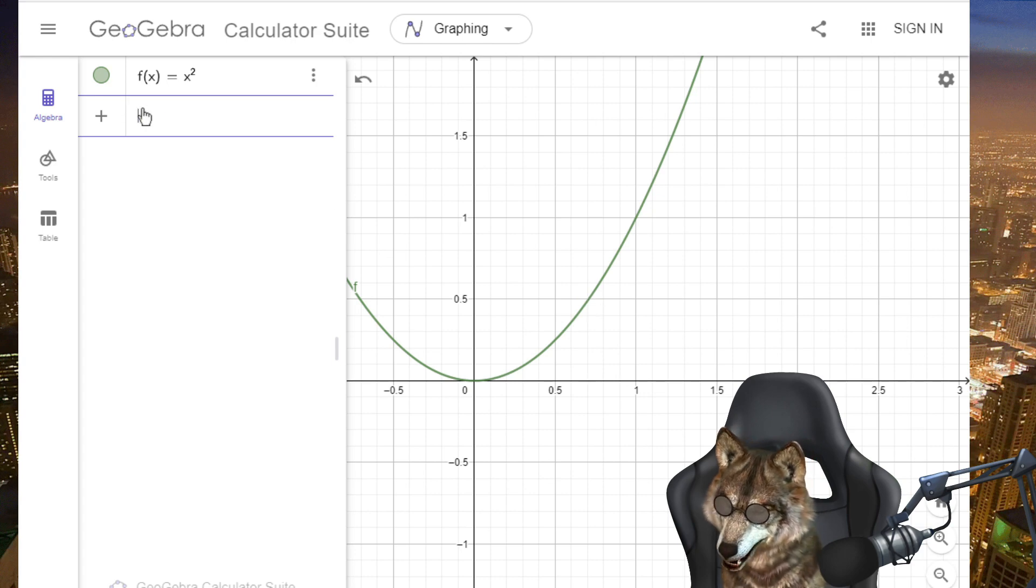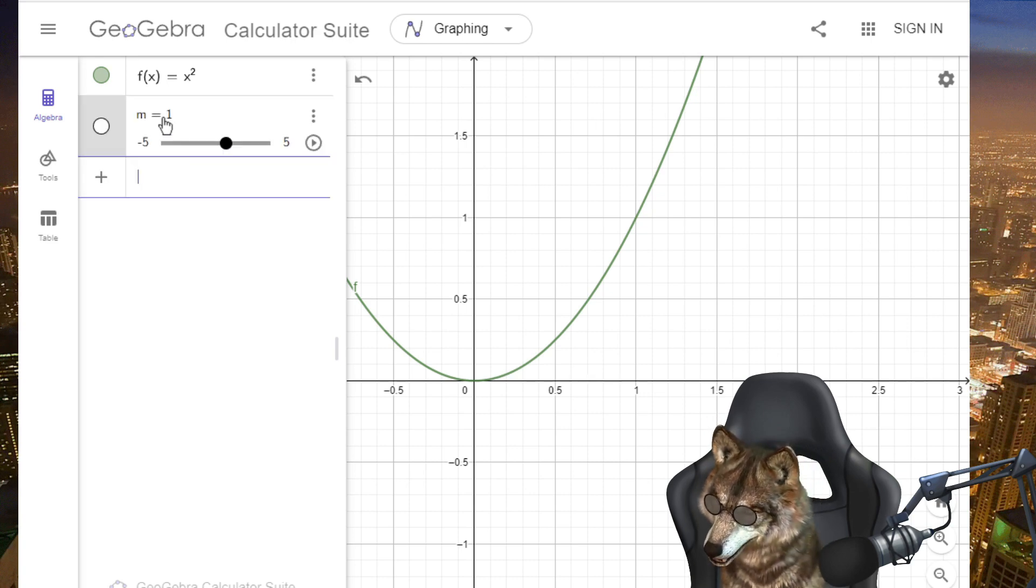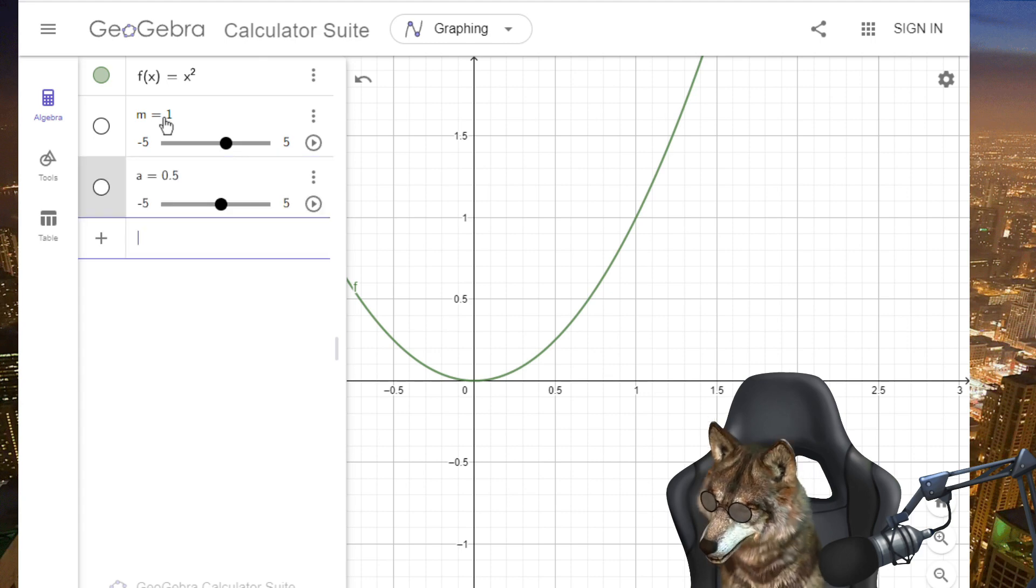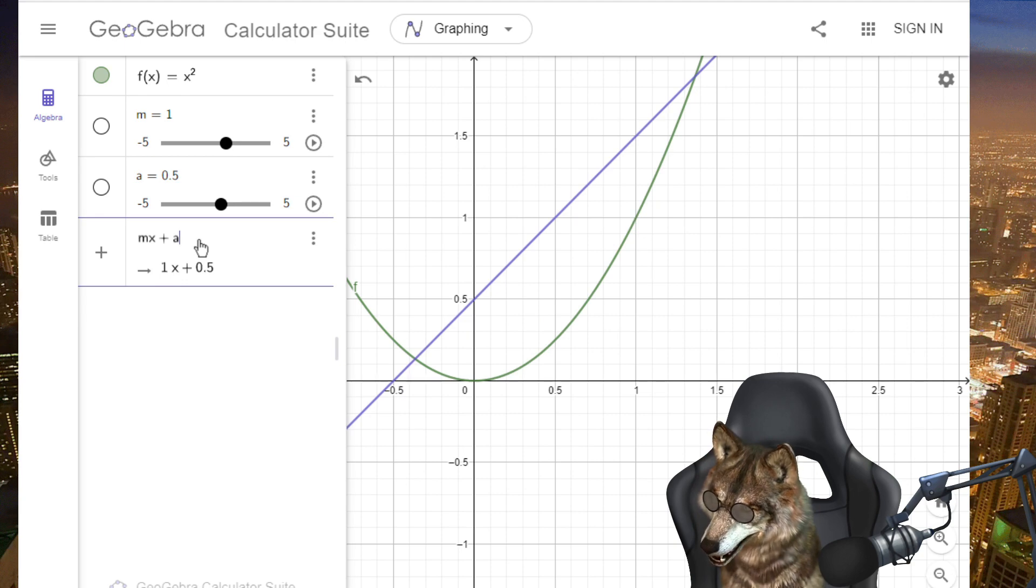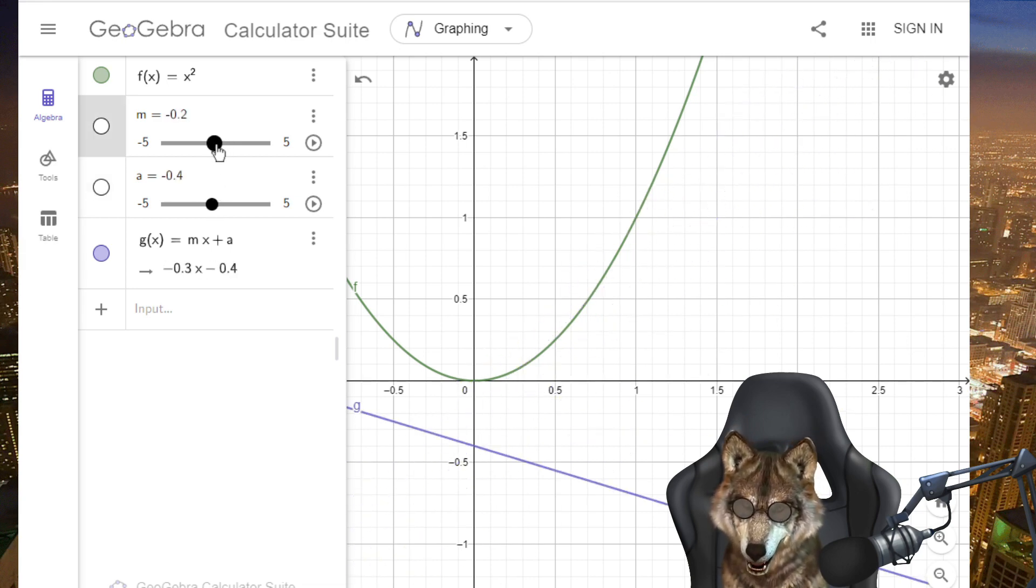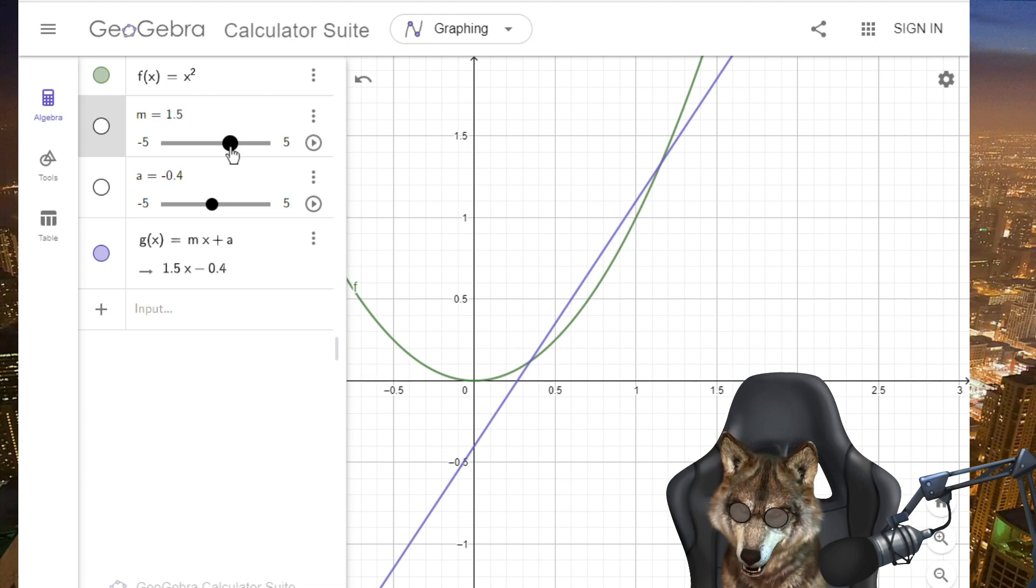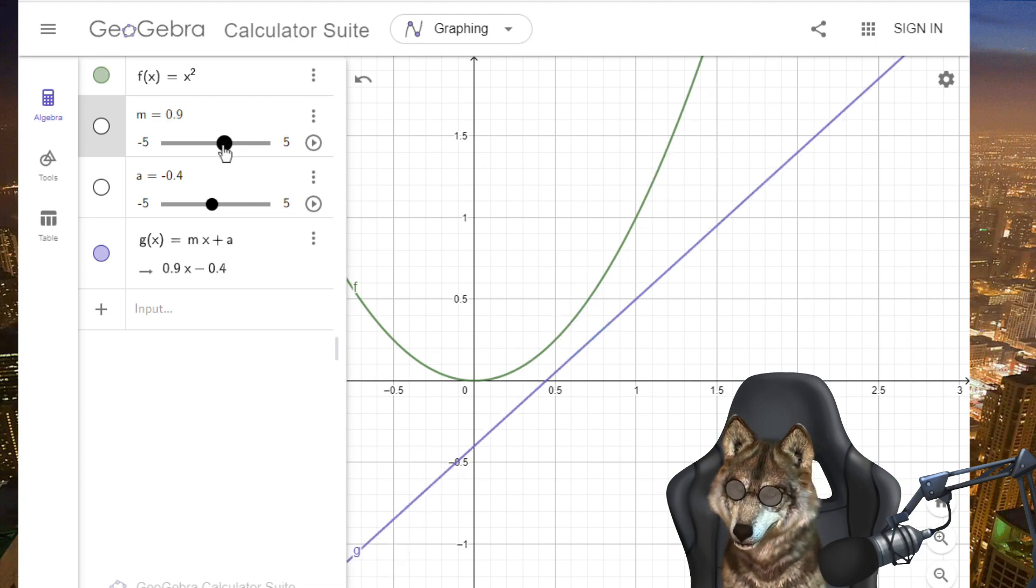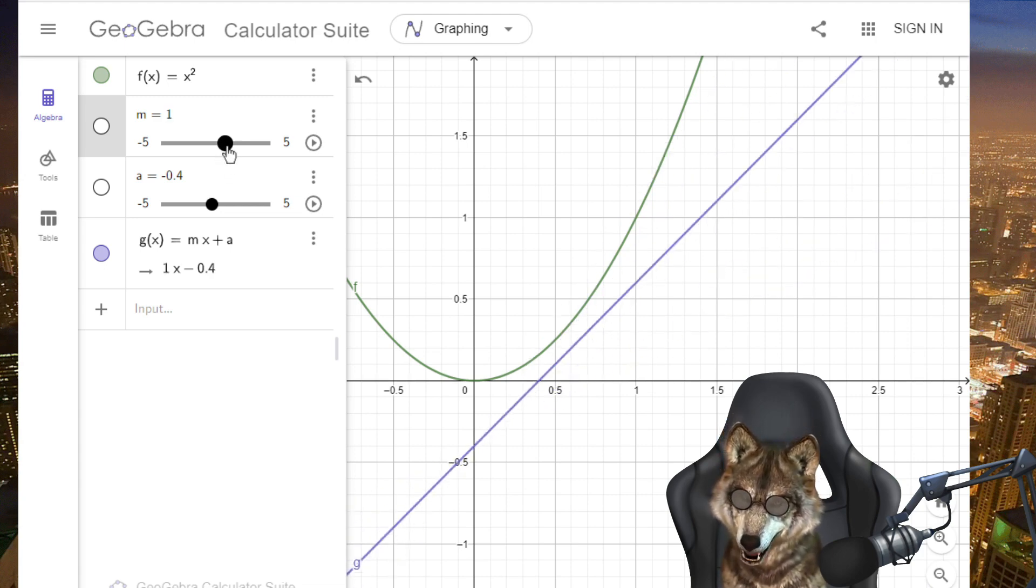Let's remember our slope function mx plus a. I'm going to say m equals one for the slope, a equals 0.5, and I'm going to create a new function here that says mx plus a. Check this out, you can use these as sliders and it updates the graph automatically. Isn't that cool? I think that's super cool.